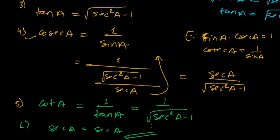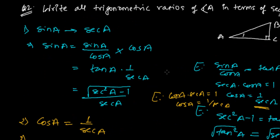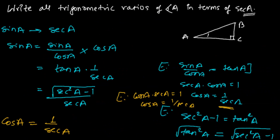And sec A is sec A that we don't have to write. Sec A is itself sec A. Like this, this question is saying. So now this is the way how to convert all the trigonometric ratios into one form to another form.